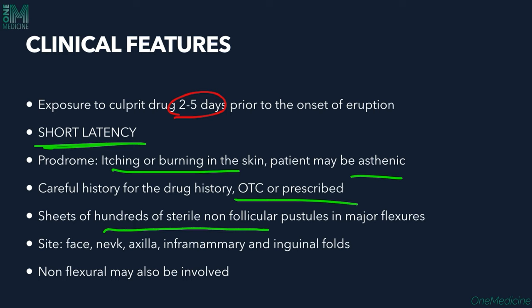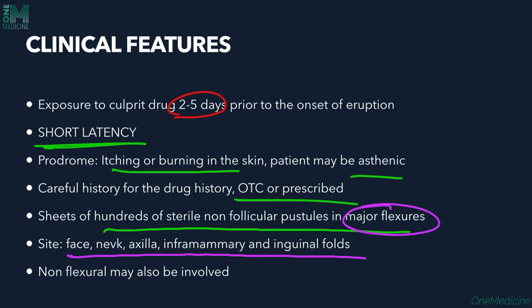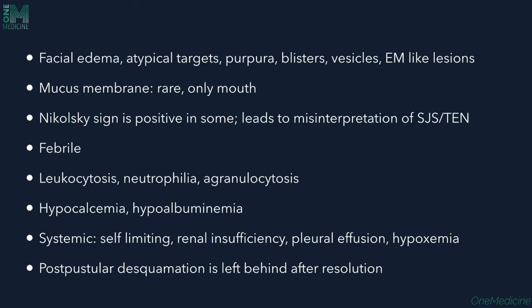Sheets of hundreds of sterile non-follicular pustules appear, with major flexors being the most commonly affected sites. Other involved sites include the face, neck, axilla, inframammary and inguinal folds — non-flexural sites can also be affected. Along with the pustules, facial edema, atypical target-like lesions, purpura, blisters, vesicles, and erythema multiforme-like lesions can be seen.